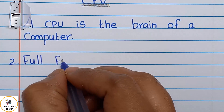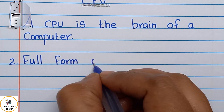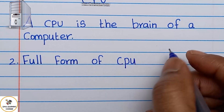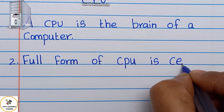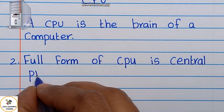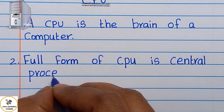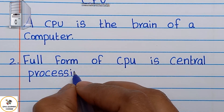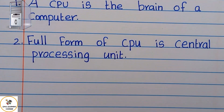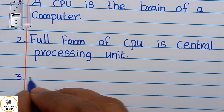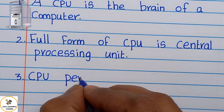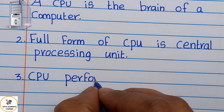Point number one: A CPU is the brain of a computer. Point number two: The full form of CPU is Central Processing Unit.